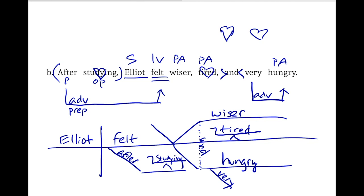Well there you have it. You can see that this sentence has been well-labeled and well-diagrammed. It's a great technique to acquire, enabling students to see how language is structured, how to order it well, so that they themselves might be able to read well, write well, and speak well. Thanks for watching.